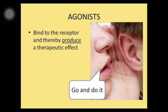Drugs can be agonists or antagonists. An agonist binds to the receptor and thereby produces a therapeutic effect — for example, binding to the receptor and signaling to increase blood flow and raise blood pressure. An antagonist binds to the receptor and blocks its action, preventing the cell from doing something specific.